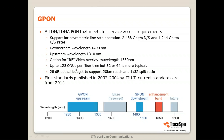As mentioned, up to 128 ONUs can be supported, although 32 or 64 is more typical. The optical budget, which is the difference between the transmitting level on one end and the receiving sensitivity on the other end, is 28 dB. This translates to 20 kilometers reach with a 1-to-32 split ratio. If you split more, you lose some power, so the reach would be lower. These numbers are benchmark numbers showing the possible reach with G-PON.